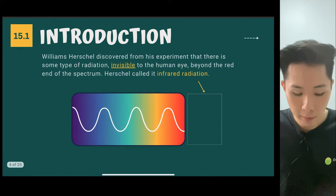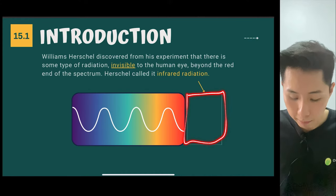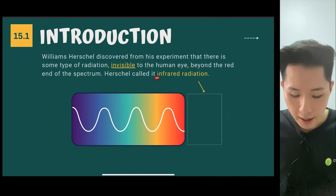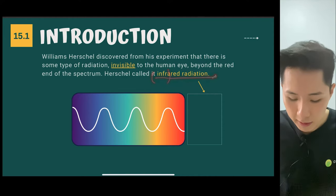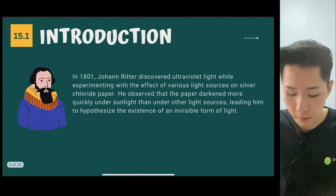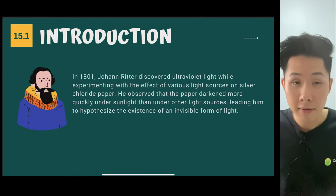And from this experiment, William Herschel discovered an invisible light beyond the red color spectrum, and he called it infrared radiation. Infrared means beyond. So that's how infrared is discovered.